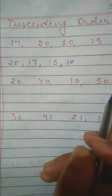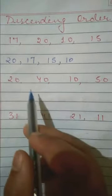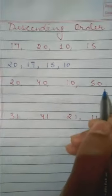Now your second question is 20, 40, 10, 50. Which is the biggest number from these? Numbers? 50.